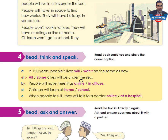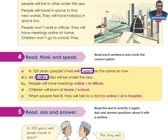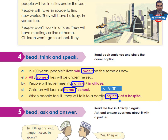Here are the correct answers for activity 4: A — people's lives won't be the same as now. B — some cities will be under the sea. C — people will have meetings online. D — children will learn at home. E — when people feel ill, they will talk to a doctor online.